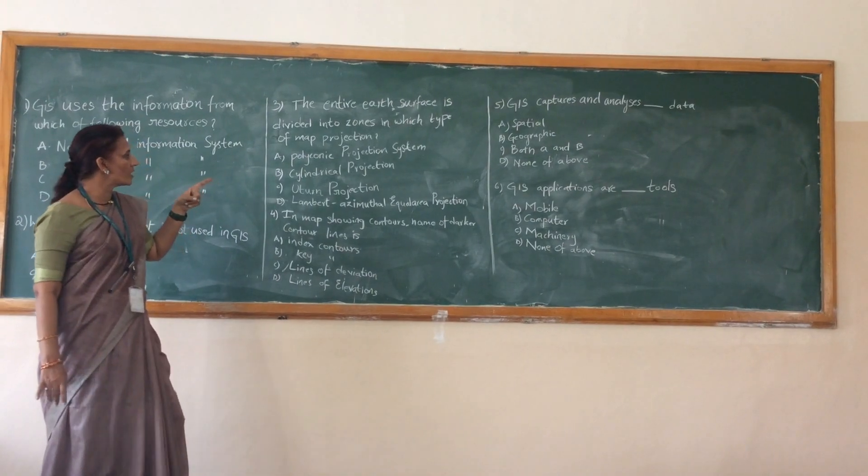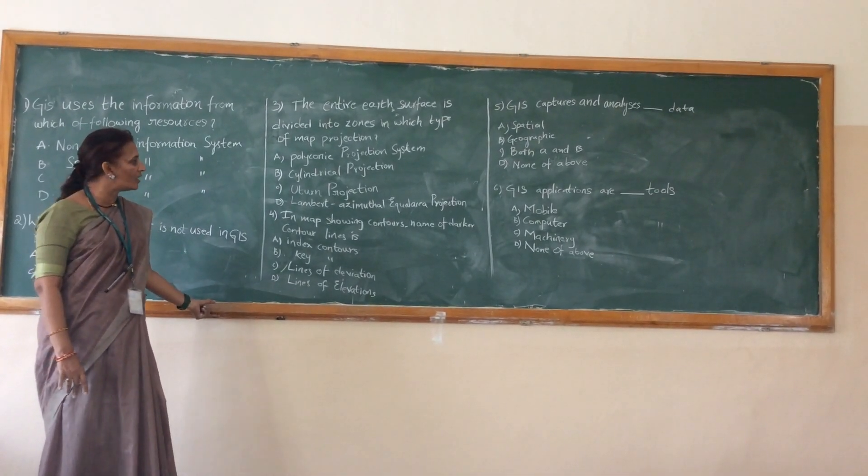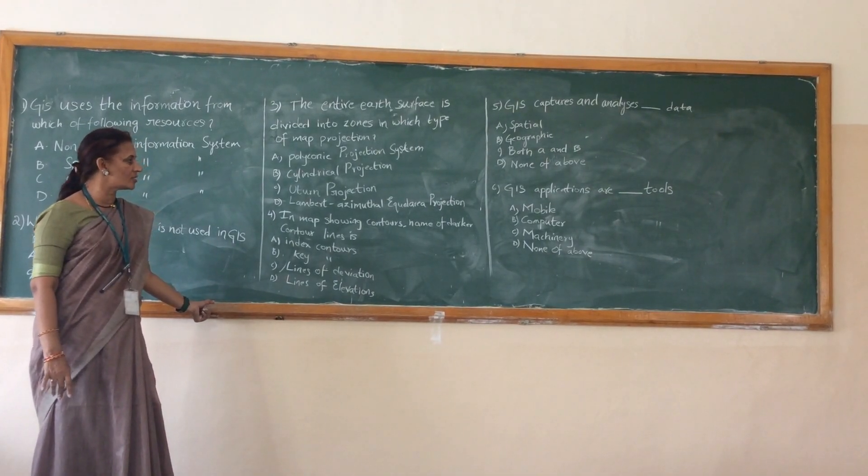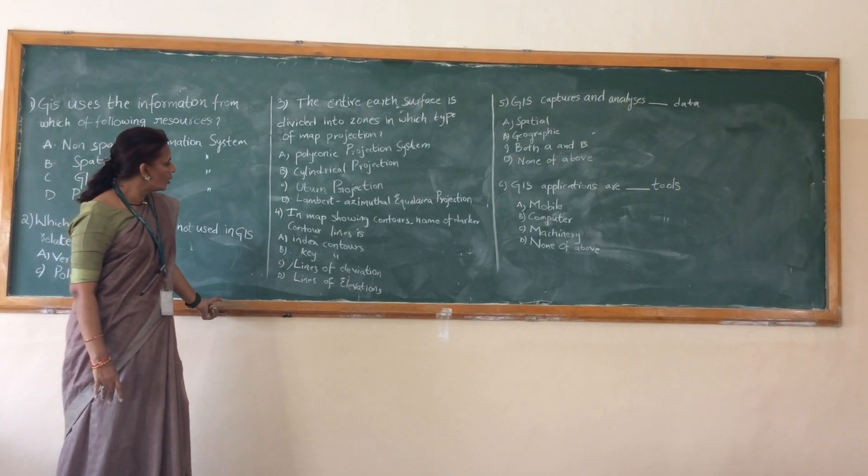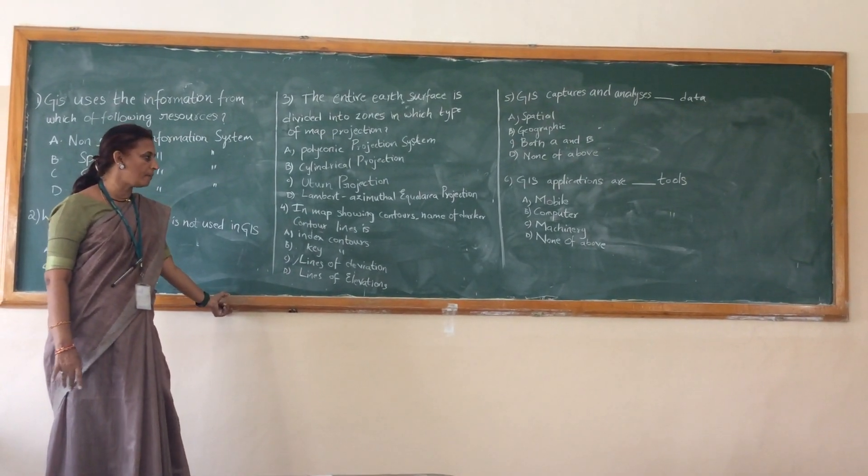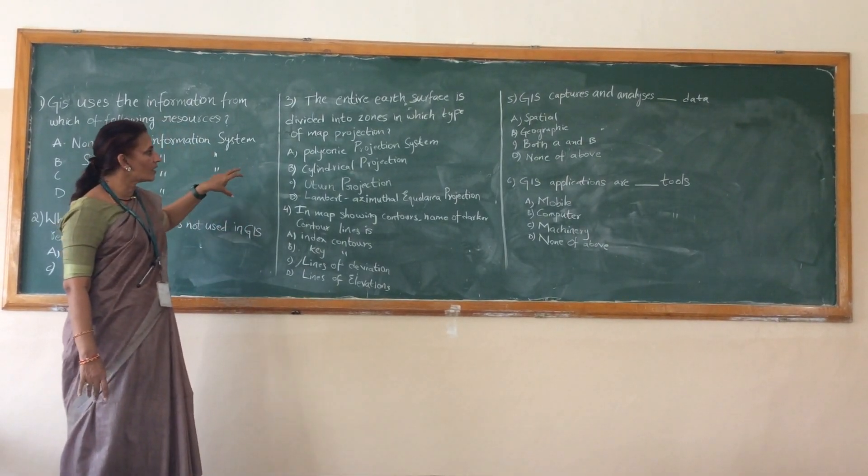The entire earth surface is divided into the zones. In which type of map projection? One is polyconic projection system. Second one is a cylindrical projection. Third one is UTM. And fourth one is a lambert azimuthal equidistant projection. This is not like that.